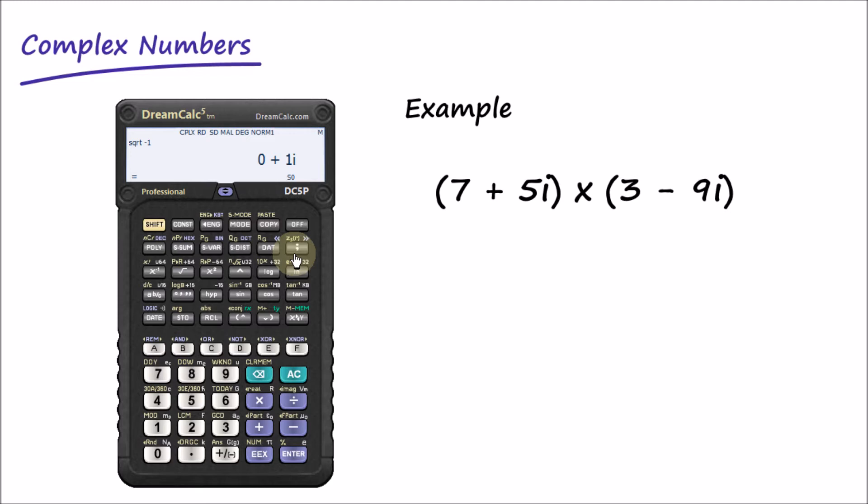So let's go ahead with the first part of the input: 7 separator 5 multiplied by.